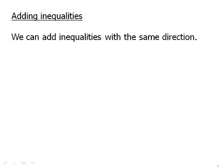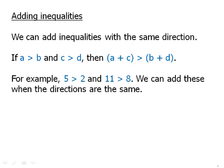First of all, we can add inequalities with the same direction, in other words, with the inequality pointing in the same direction. So if a is greater than b and c is greater than d, then we can just add them together. a plus c has to be greater than b plus d. And that sort of makes sense, that if we add the two big things, it's going to be greater than the sum of the two small things. For example, 5 is greater than 2 and 11 is greater than 8. Those are two true inequalities. We can add them when the directions are the same, and we get another true statement: 16 is greater than 10.